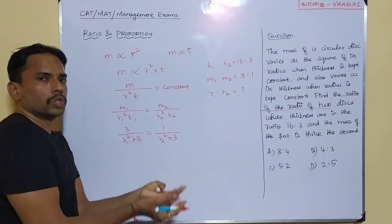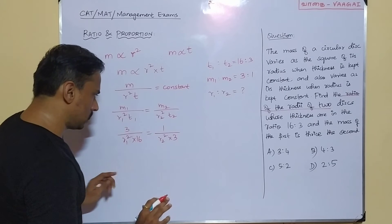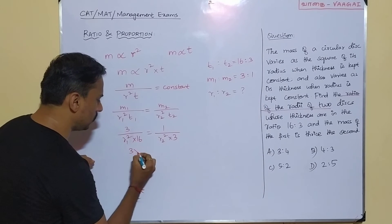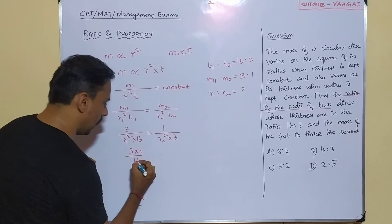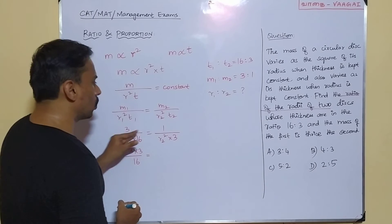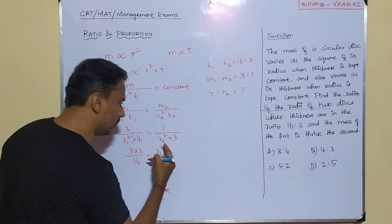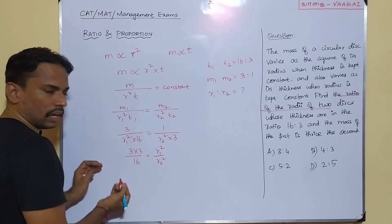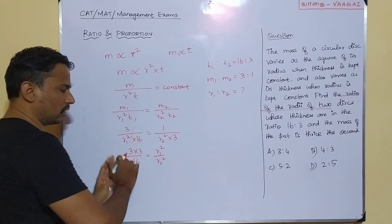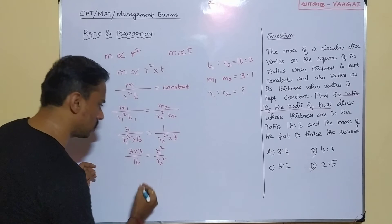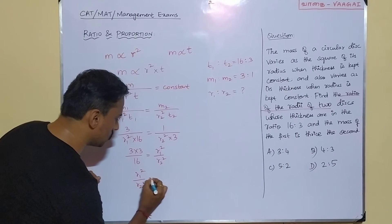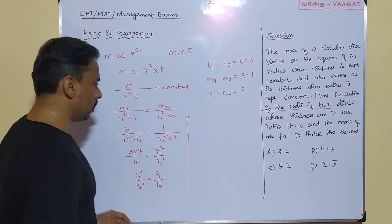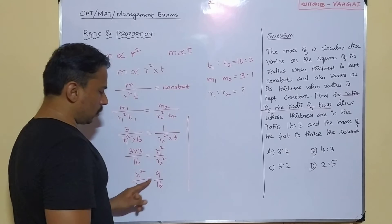Now we bring R1 and R2 squares to one side and all the numbers to the other side. Bringing the 3 from the denominator on the right to the left numerator, we get 3 times 3 — that is 9 — over 16 on the left side, and R1 squared over R2 squared on the right side. Interchanging positions, we get R1 squared by R2 squared is equal to 9 by 16.